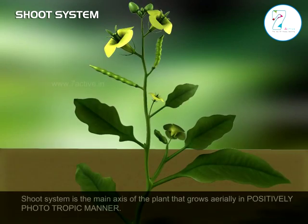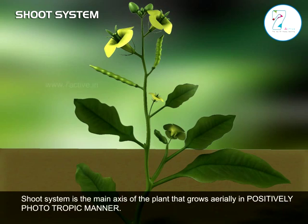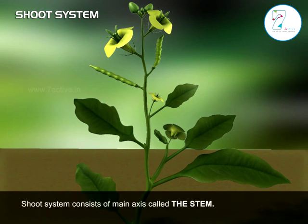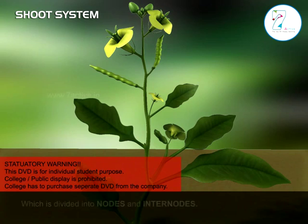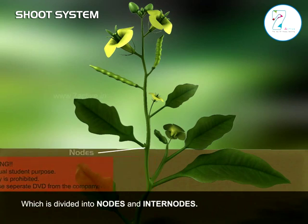Shoot system is the main axis of the plant that grows aerially in a positively phototropic manner. Shoot system consists of a main axis called the stem, which is divided into nodes and internodes.